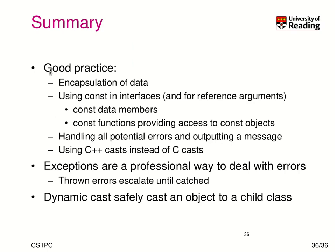To wrap up, good practice means encapsulating our data and using constant interfaces — const data members and const functions — to provide access to const objects. We should handle all potential errors gracefully, outputting messages as needed. We should prefer C++ casts over C casts, though C casts remain available for backwards compatibility. Exceptions are a professional way to deal with errors: you throw errors and they are escalated until caught and handled properly. Lastly, dynamic casts are a safe way of casting an object to a child class.